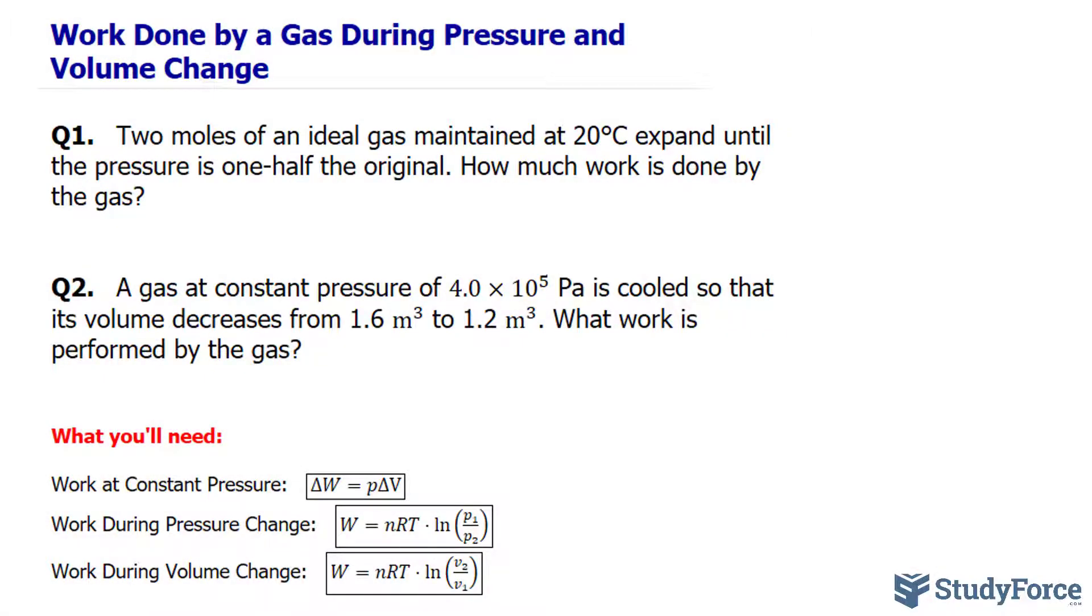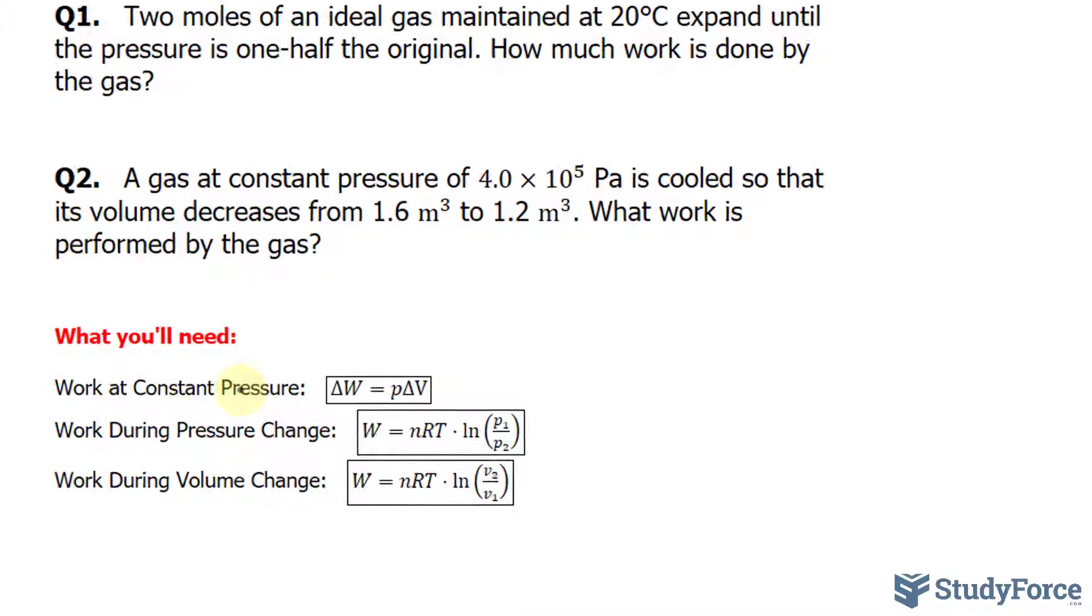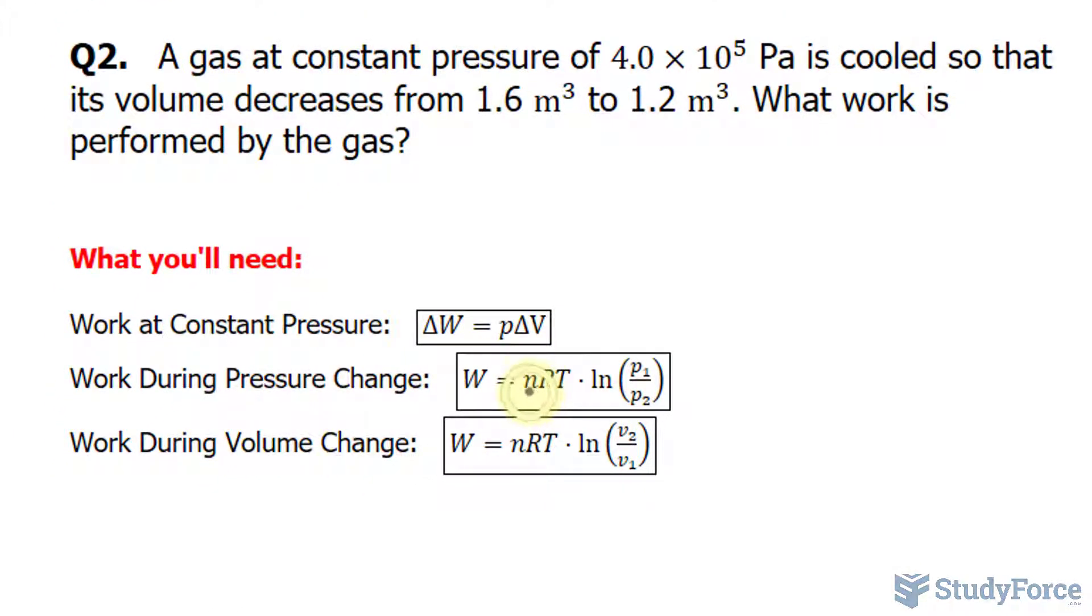In order to calculate this, we will need to use the second of the three formulas shown underneath, where to calculate the work during pressure change, you take the number of moles, represented as little n, times r being the gas constant, times the temperature times ln of pressure 1 divided by pressure 2.